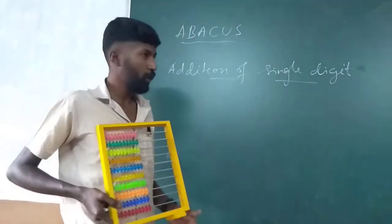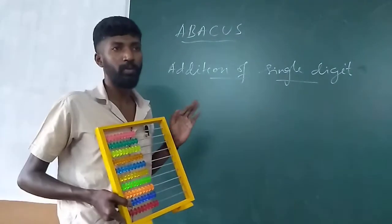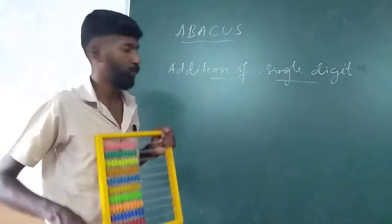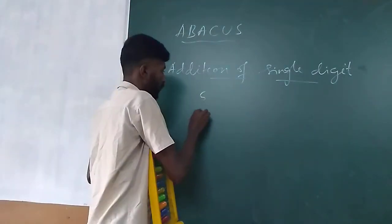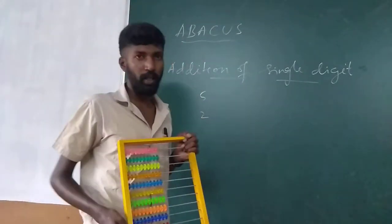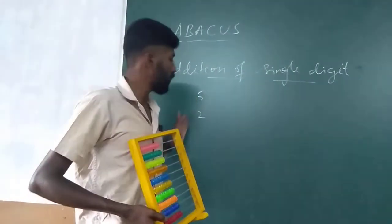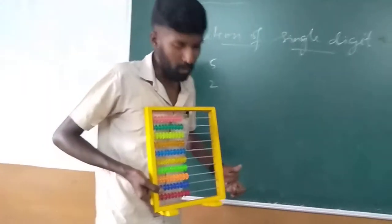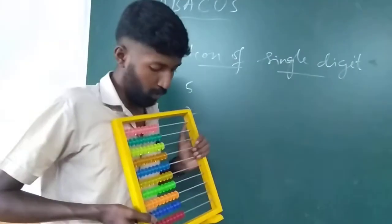Now I am going to teach you how to add single digits. Suppose if I add 5 plus 2. So, all our single digit values - we are going to add all the single digits in one space. Single digit in one space.